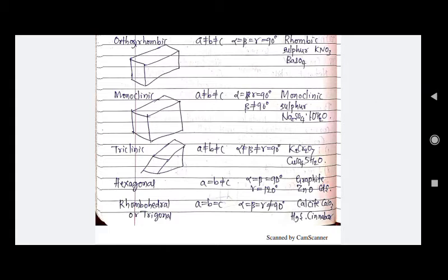Then comes triclinic: a ≠ b ≠ c, and alpha ≠ beta ≠ gamma ≠ 90°. Examples are K2Cr2O7 and CuSO4. Then comes hexagonal: a = b ≠ c, alpha = beta = 90°, and gamma = 120°. Examples are graphite, ZnO, and CdS. Then comes rhombohedral: a = b = c, and alpha = beta = gamma ≠ 90°. Examples are calcite (CaCO3), HgS, and cinnabar.